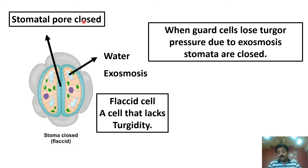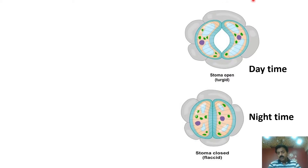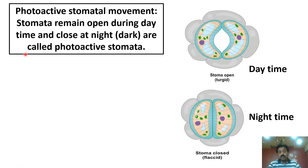The turgid or flaccid state of guard cells is actually related to the concentration of solutes — such as sugars and potassium ions. Some plants, like C4 plants such as sugarcane, have stomata that open during the daytime and close at night. Such stomata are called photo-active stomata, and their movement is called photo-active stomatal movement.